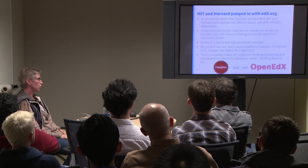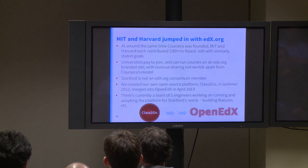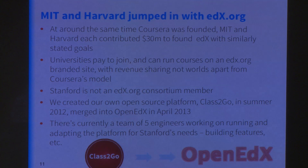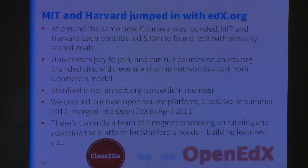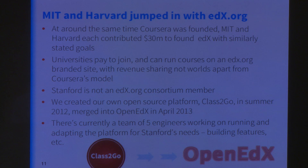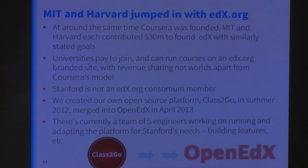Universities pay to join the edX.org consortium and can run courses on an edX-branded site with revenue sharing. Stanford is not an edX.org consortium member. We were hesitant — we weren't sure whether nonprofit versus for-profit really made a meaningful difference. EdX said they were planning to be open source, but at the time we wanted an open source platform, they weren't yet. So at Stanford we built our own open source platform called Class2Go. When edX did go open source, we decided to put more wood behind fewer arrows and dropped Class2Go. The same engineering team — five engineers at Stanford — now works on the open edX platform.